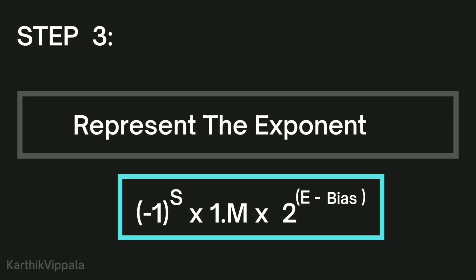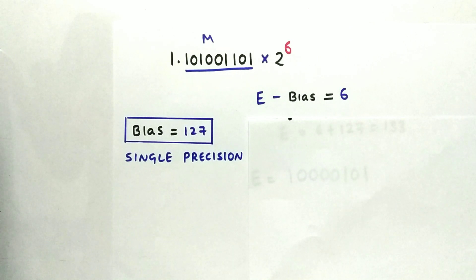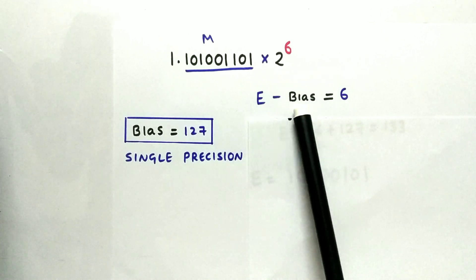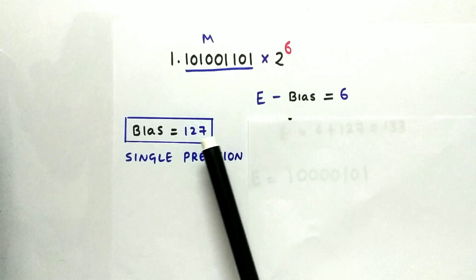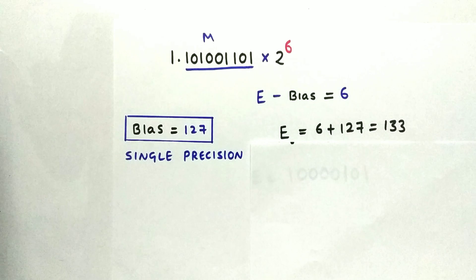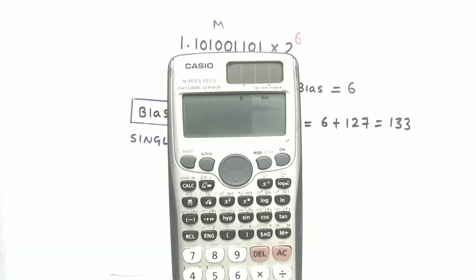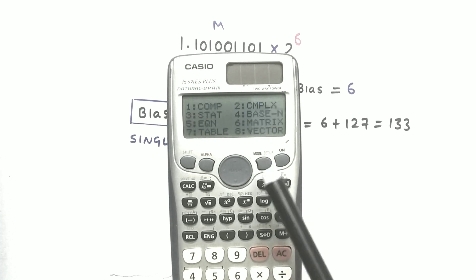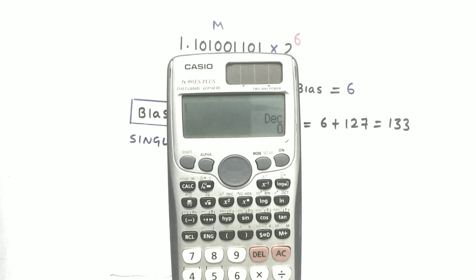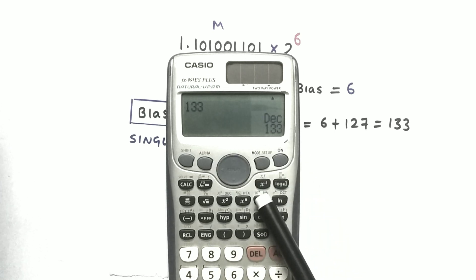The third step is to represent the exponent. We have our mantissa and sign. Since we got e − bias = 6 and our bias is 127, substituting gives exponent = 133. Now we need to represent this exponent in binary. You can do this manually or use a calculator: turn it on, go to mode, press 4 for base conversion, type in 133, and press equal. Then press the binary button and you get the binary value of the exponent.